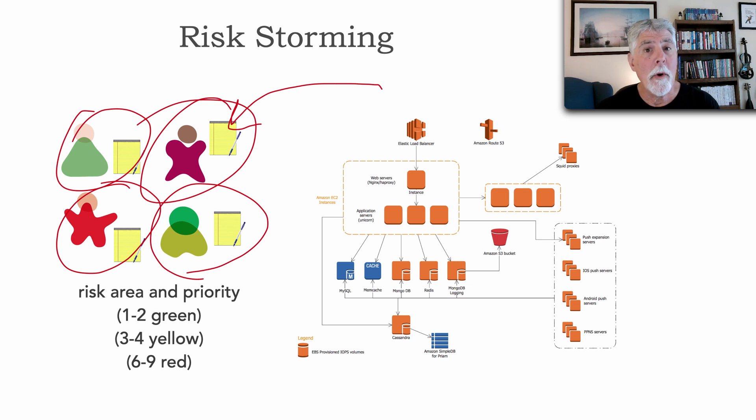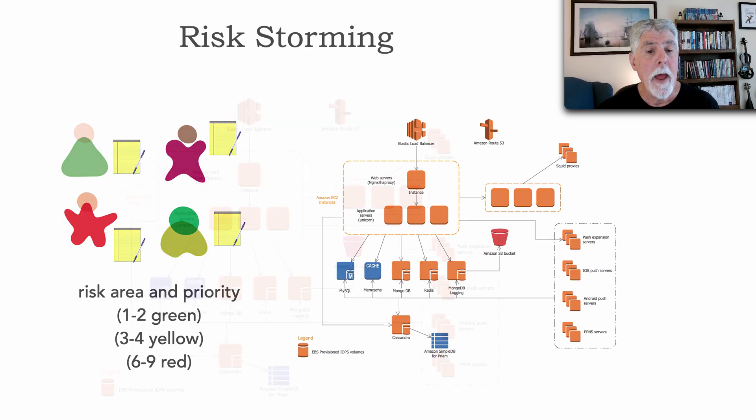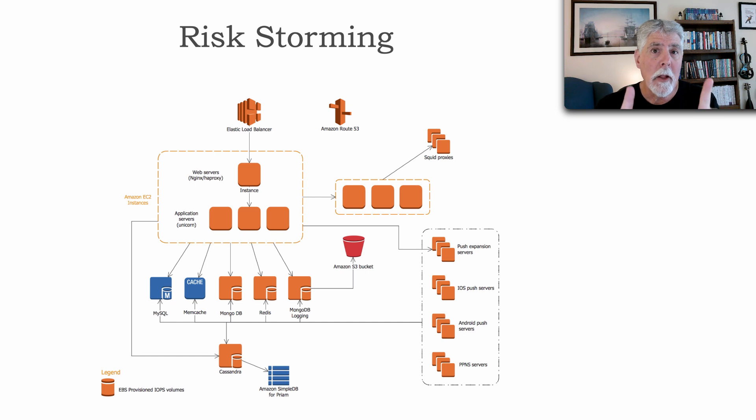When phase two starts, we all get together. Risk storming sessions usually take, on average, around an hour or so. And everybody gets together and starts putting yellow or red or green post-it notes with the number on it of where they found areas of risk.